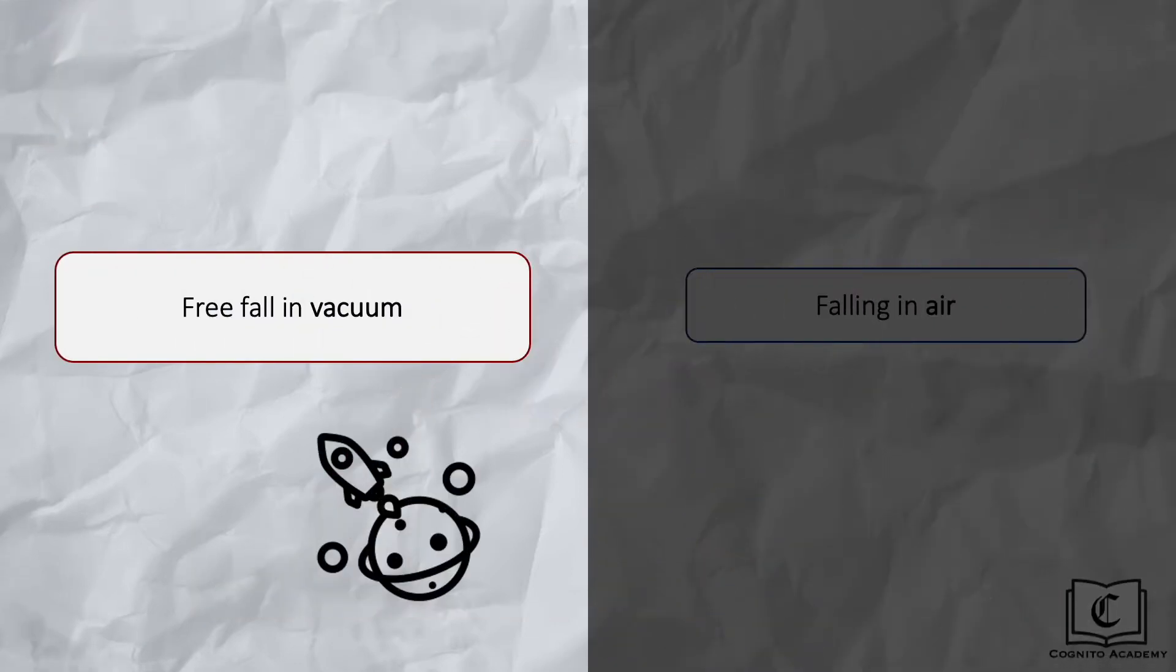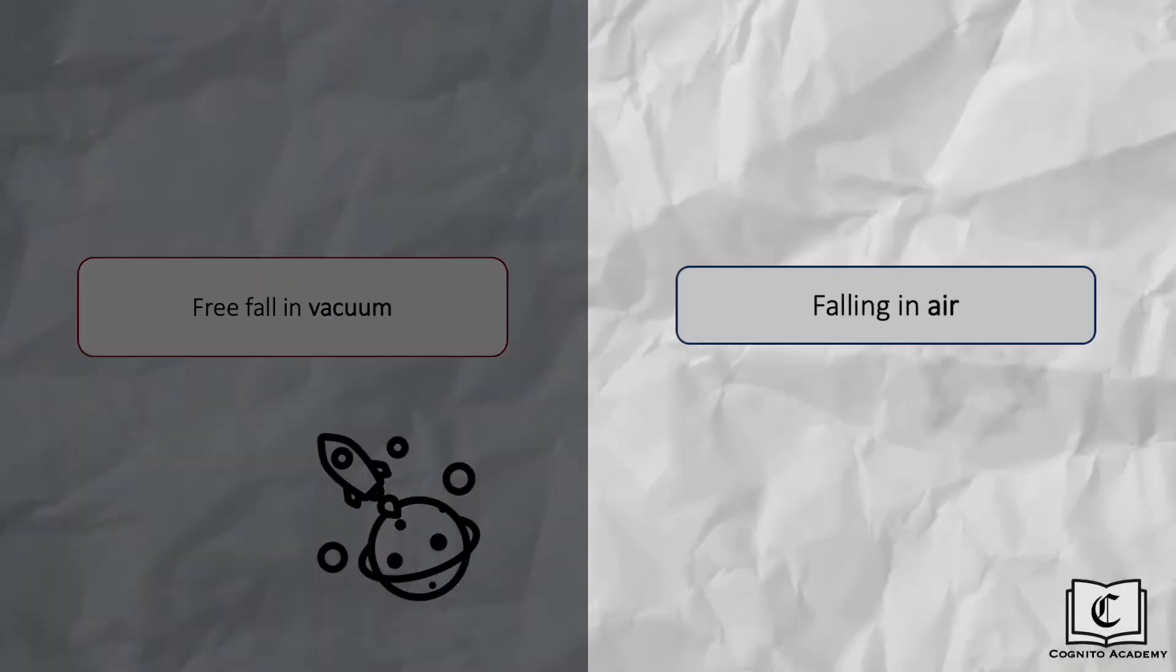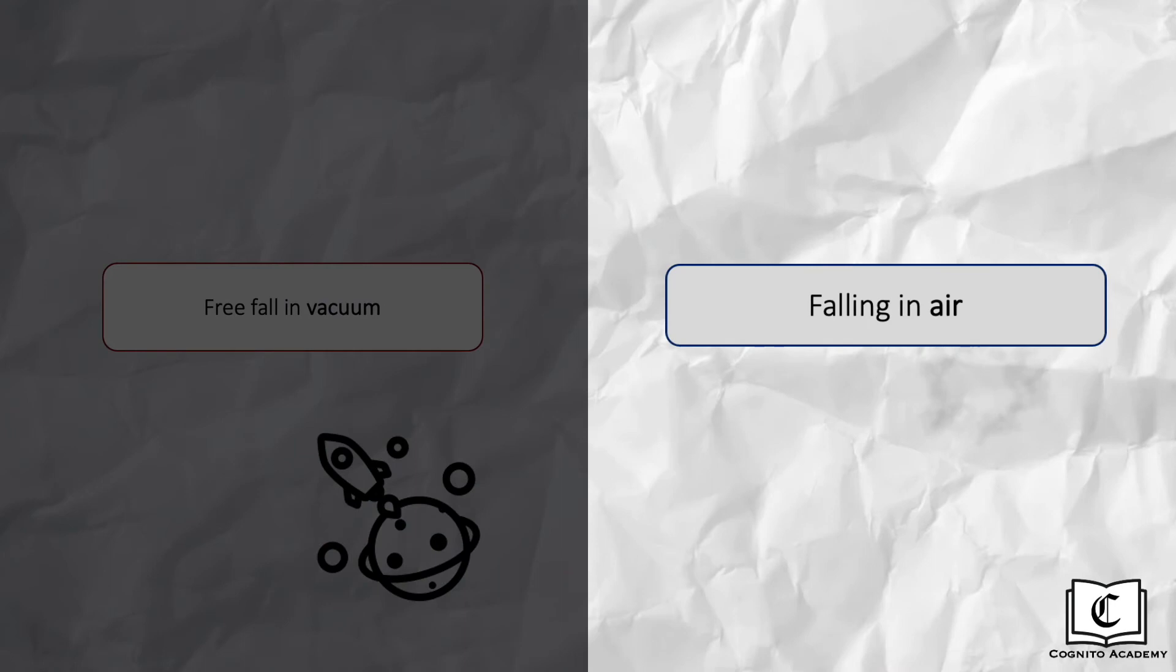We have covered freefall in vacuum, but what about falling in air? In real life, air is present all around us, hence air resistance is bound to occur on objects that are falling. Here is a clip of feathers falling in air. Observe their speed. Notice that they are falling at constant speed, instead of accelerating down like the bowling ball and the feather just now.